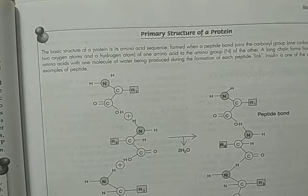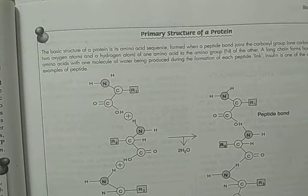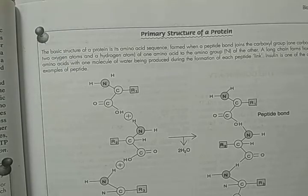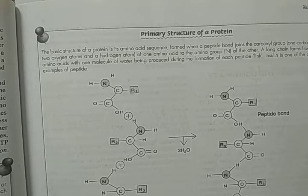Other prokaryotes and even yeast — single-cell eukaryotes — build ATP, that is adenosine triphosphate, without oxygen through a process called fermentation. Fermentation is also called anaerobic respiration or anaerobic glycolysis. It is the chemical process by which living cells degrade sugar in the absence of air to yield part or all of the energy required by an organism. Certain microorganisms such as yeast and some bacteria exist in the absence of oxygen — those are called anaerobic glycolysis organisms.